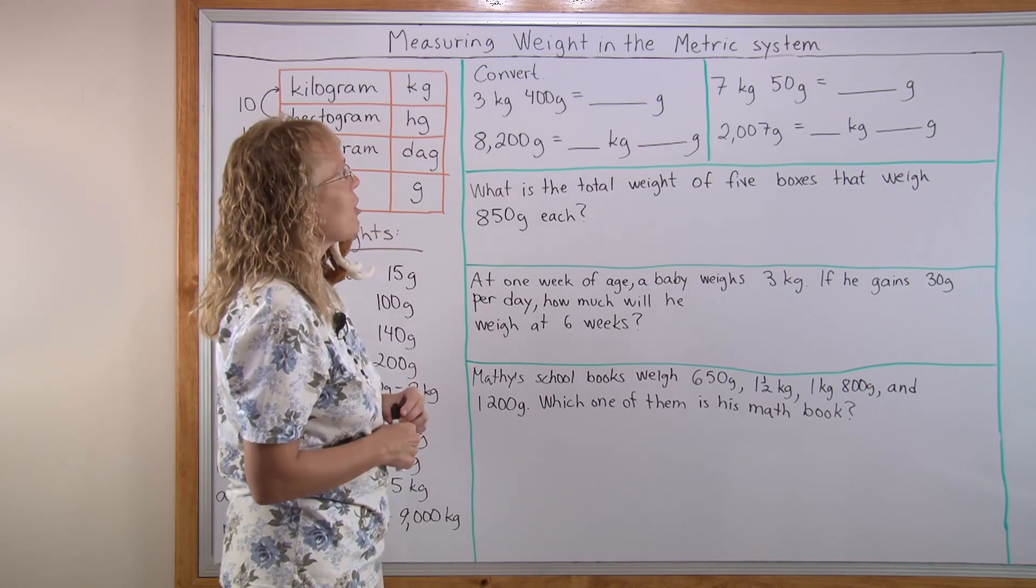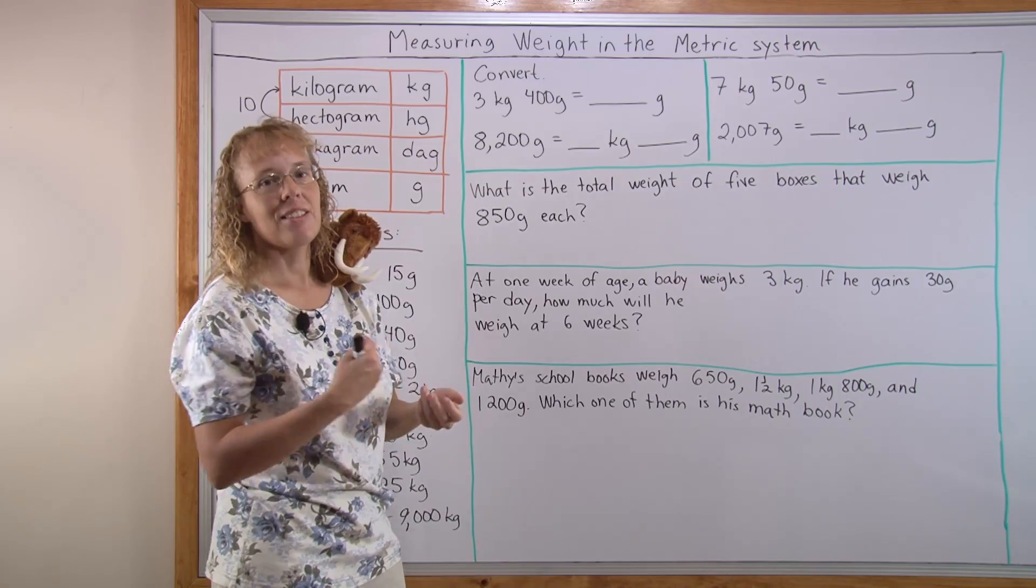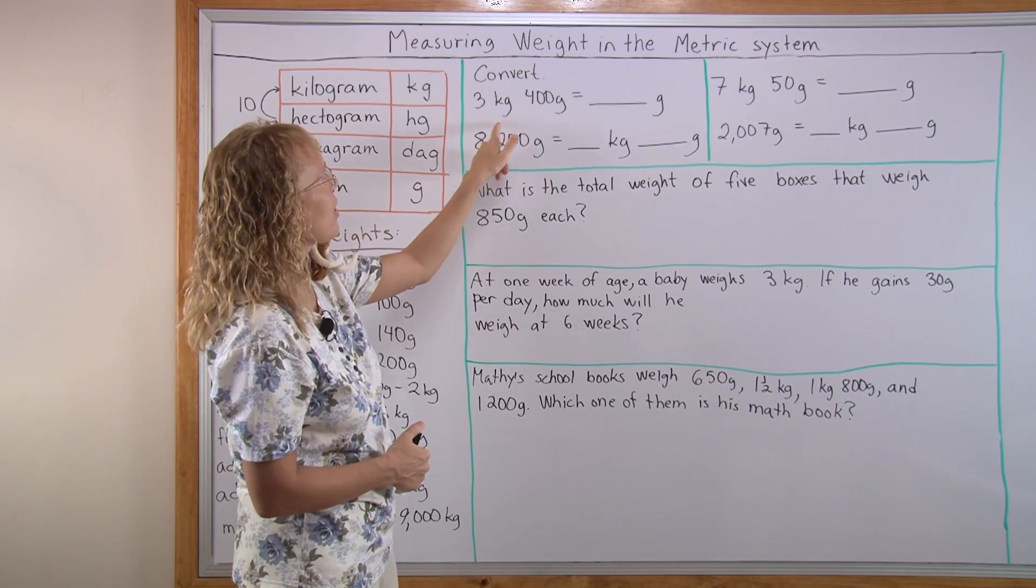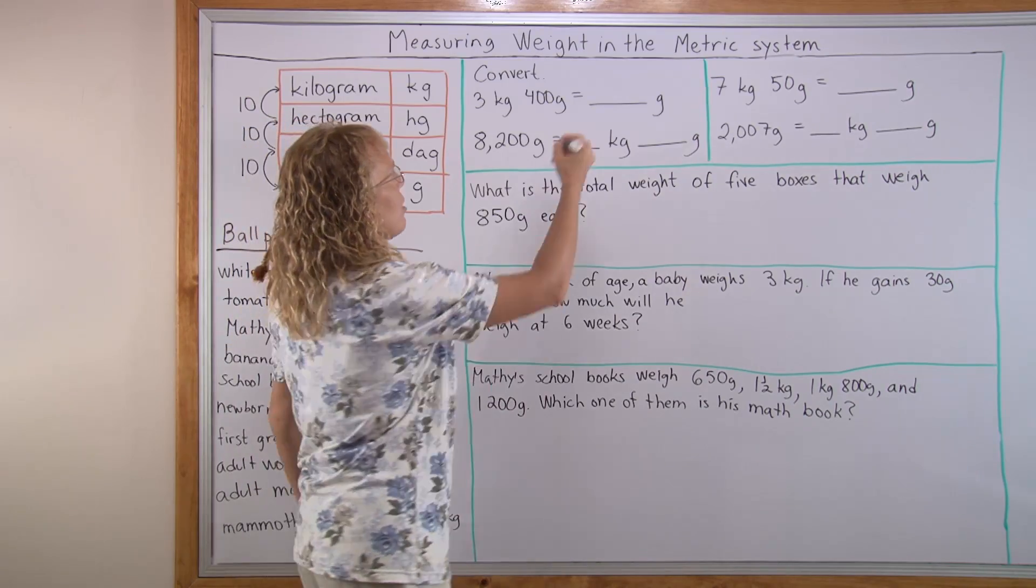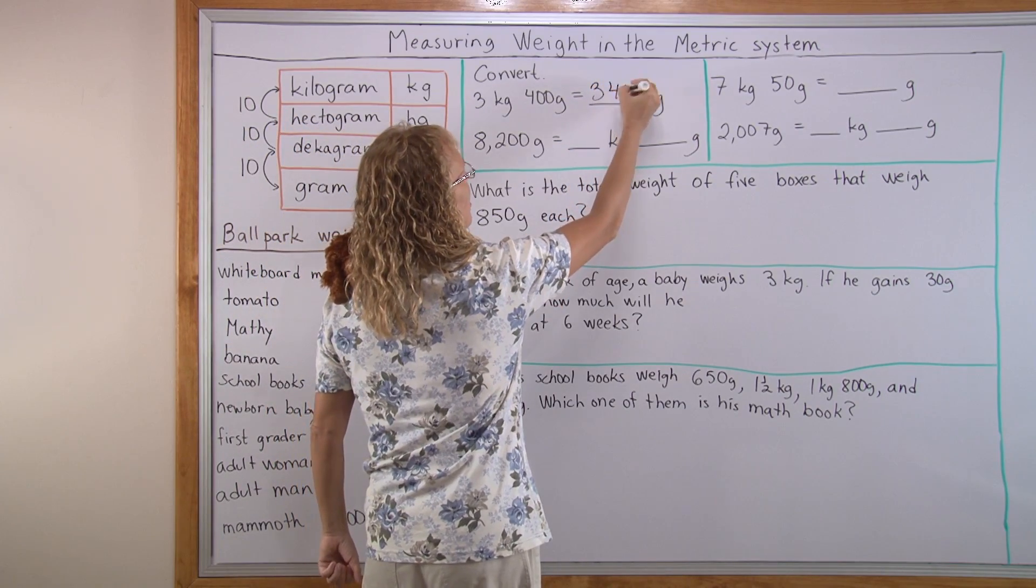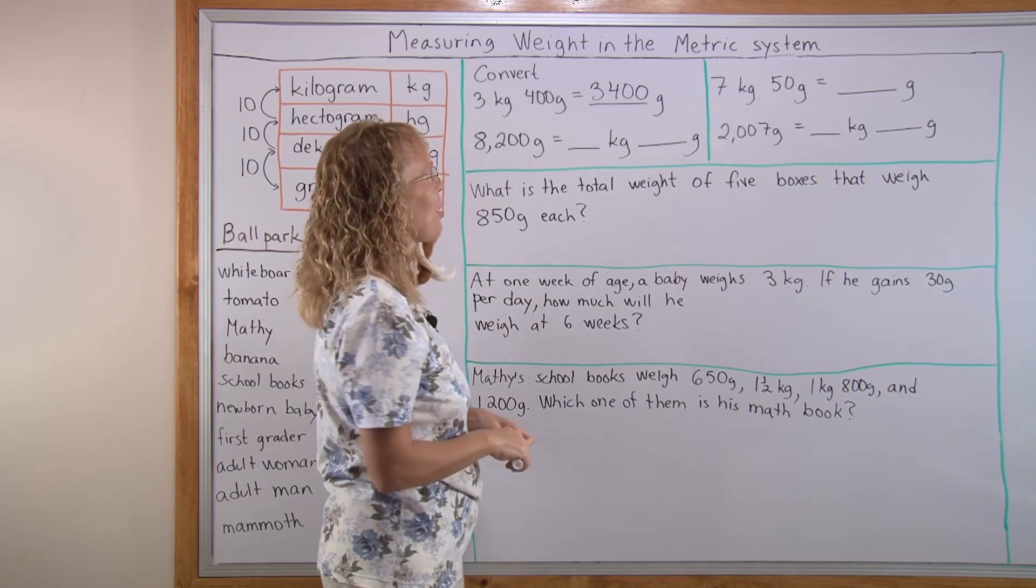Let's do some conversions between grams and kilograms. Remembering that kilo here means 1,000. Kilogram means 1,000 grams. So 3 kilograms here would be 3,000 grams. Right? So we get the total of 3,400 grams.